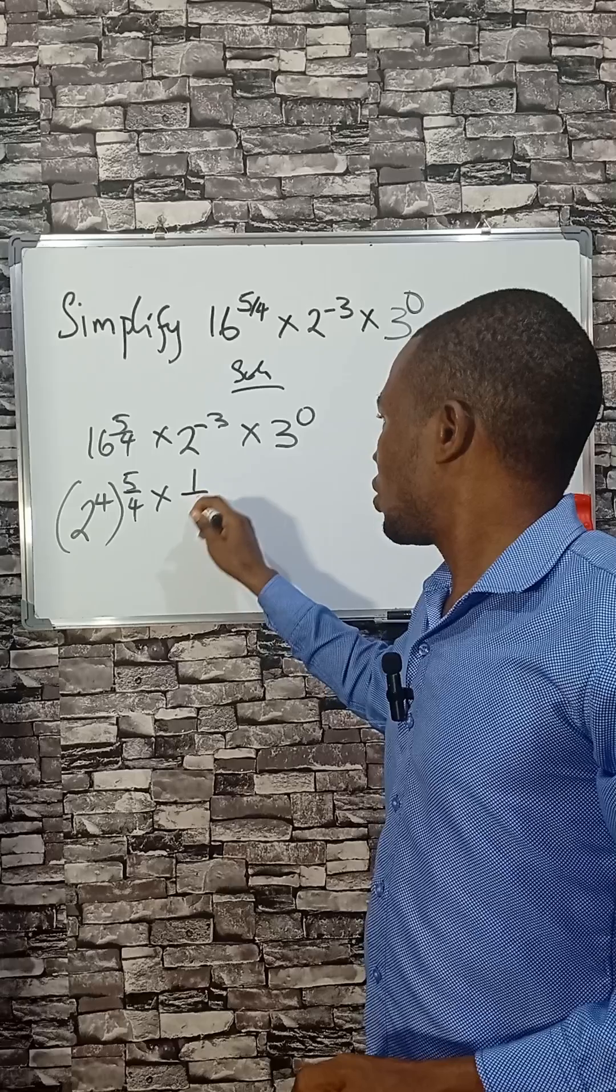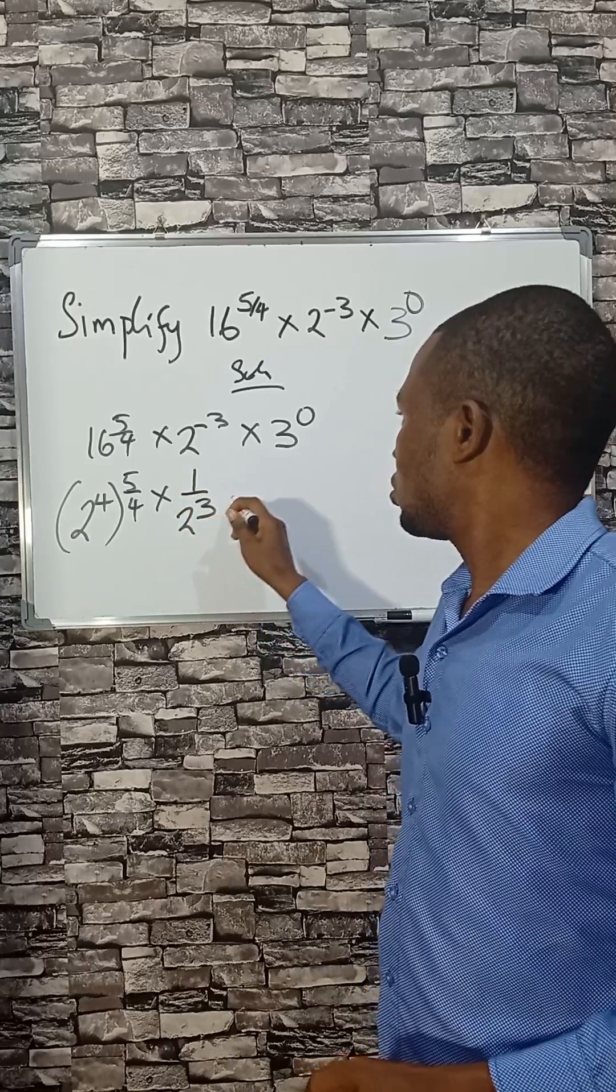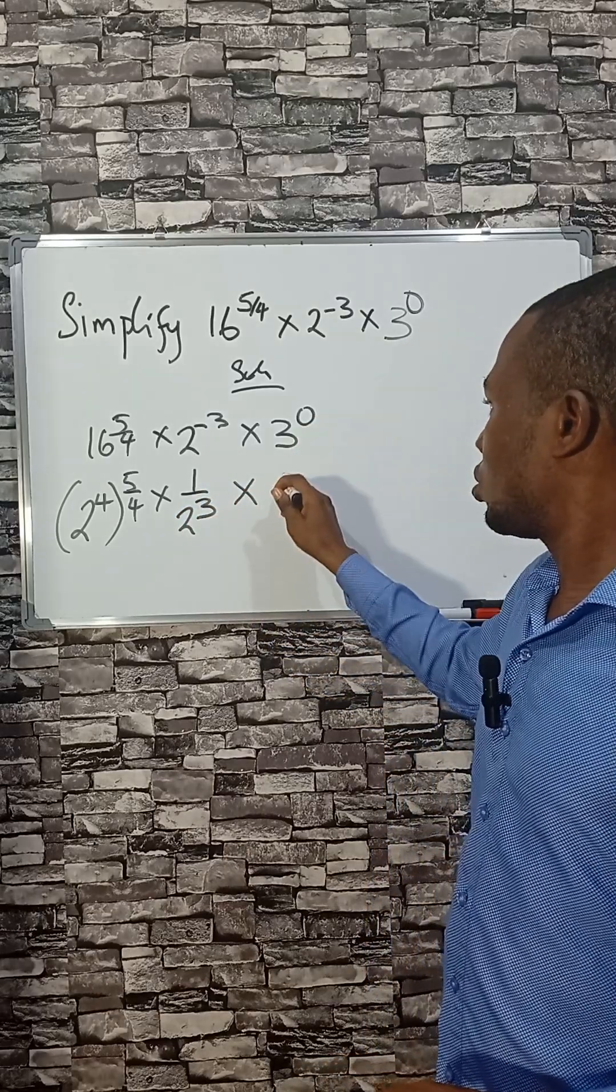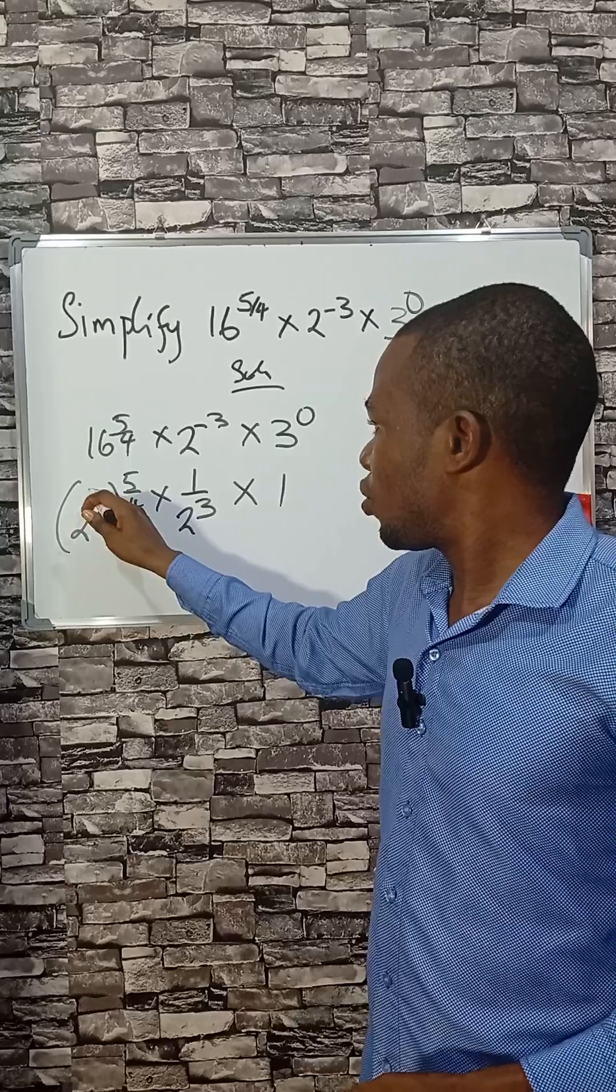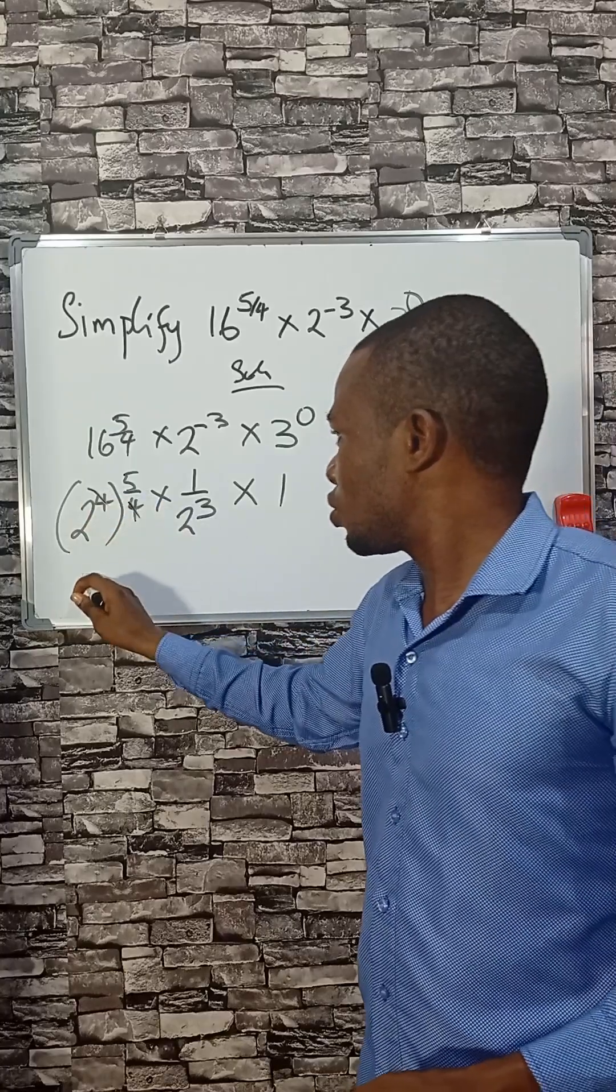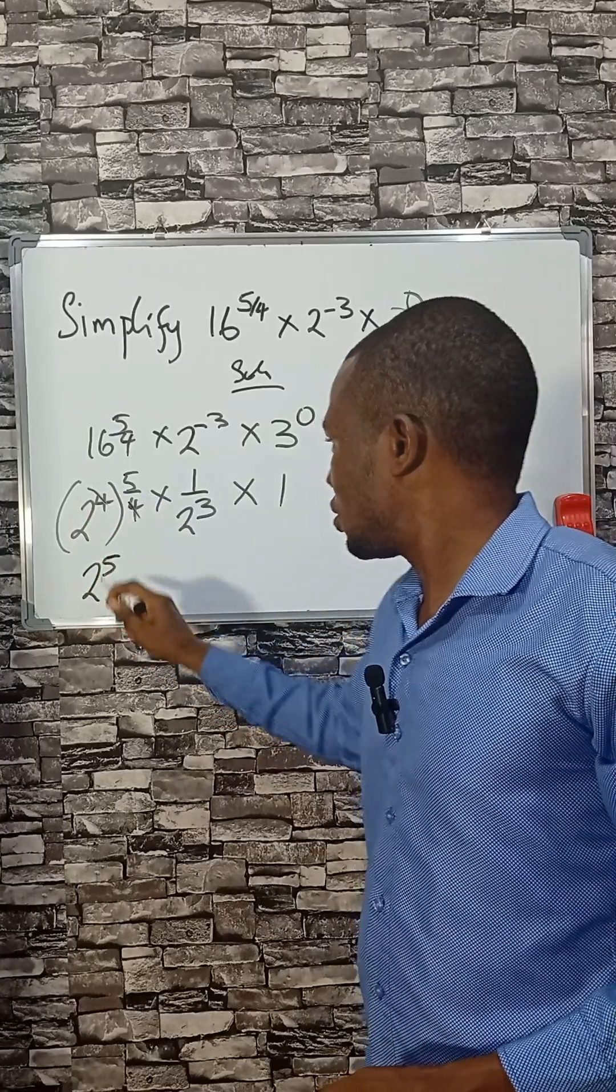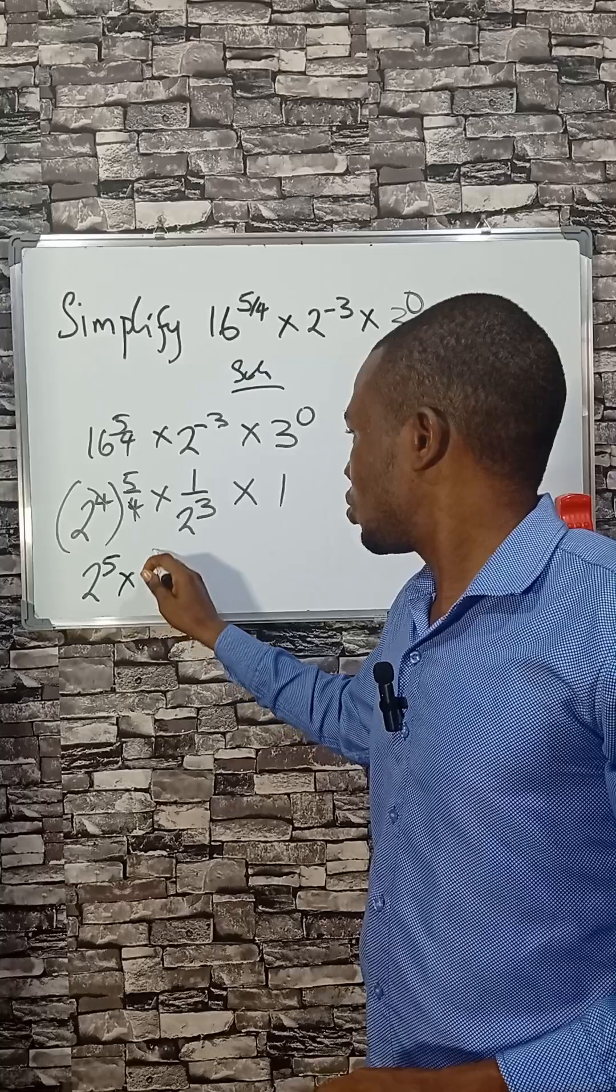This can be written as 1 over 2, and 3 raised to the power of 0 is 1. So 4 here can cancel 4 here, giving us 2 raised to the power of 5 times 1 raised to the power of 2.